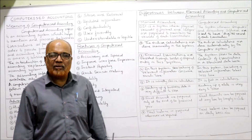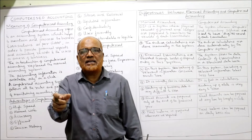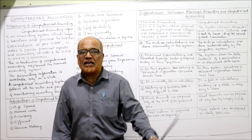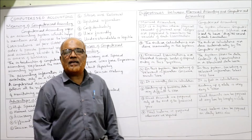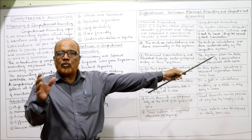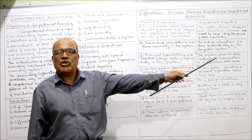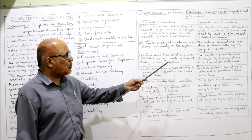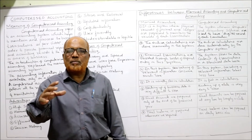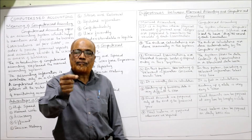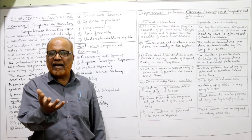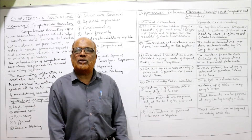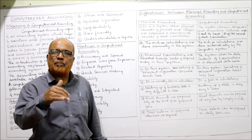In manual accounting, all calculations — totaling, casting — are done manually, so there are more chances of calculation errors. In computerized accounting, calculations are done automatically by the software. Also, in manual accounting, financial transactions are first recorded through books of original entry — the journal — as the first step. But in computerized accounting, transactions are directly posted to the concerned ledger accounts, so one step is avoided.